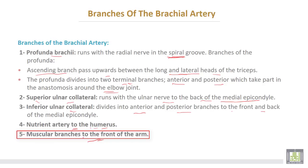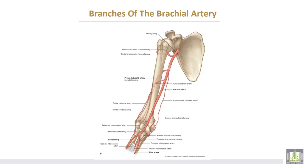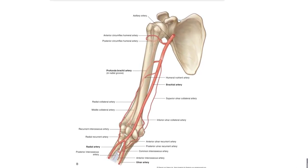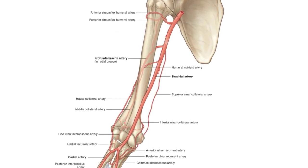This is the axillary artery, which at the lower border of the teres major continues as the brachial artery. The brachial artery in the cubital fossa divides into two terminal branches: radial and ulnar arteries. The brachial artery gives many branches — profunda brachii, which descends posterior to the humerus in the spiral groove with the radial nerve; the superior ulnar collateral branch; the inferior ulnar collateral; and the nutrient artery entering the nutrient foramen of the humerus.